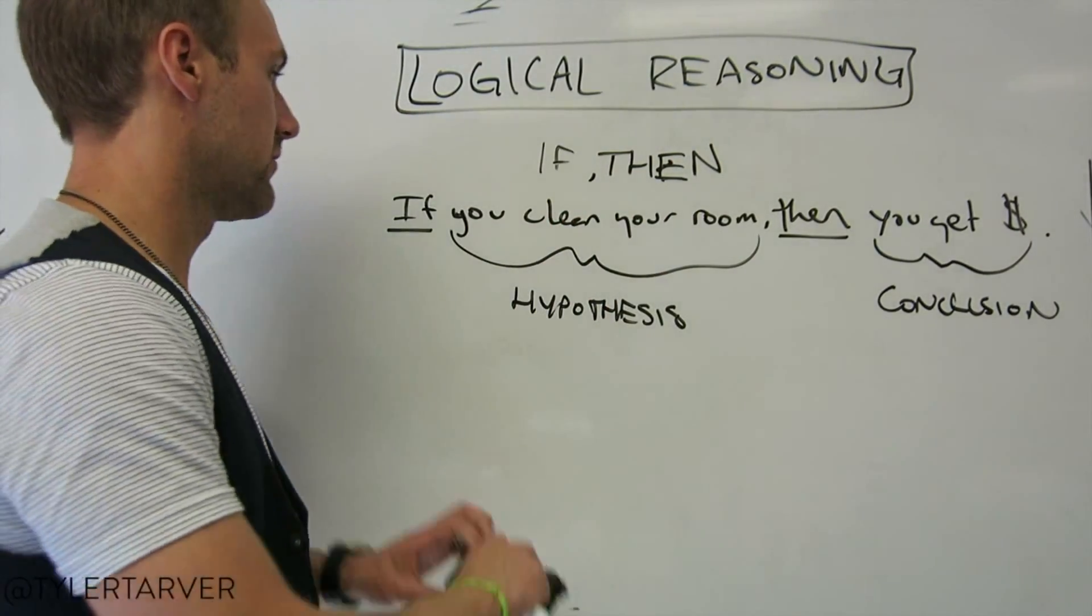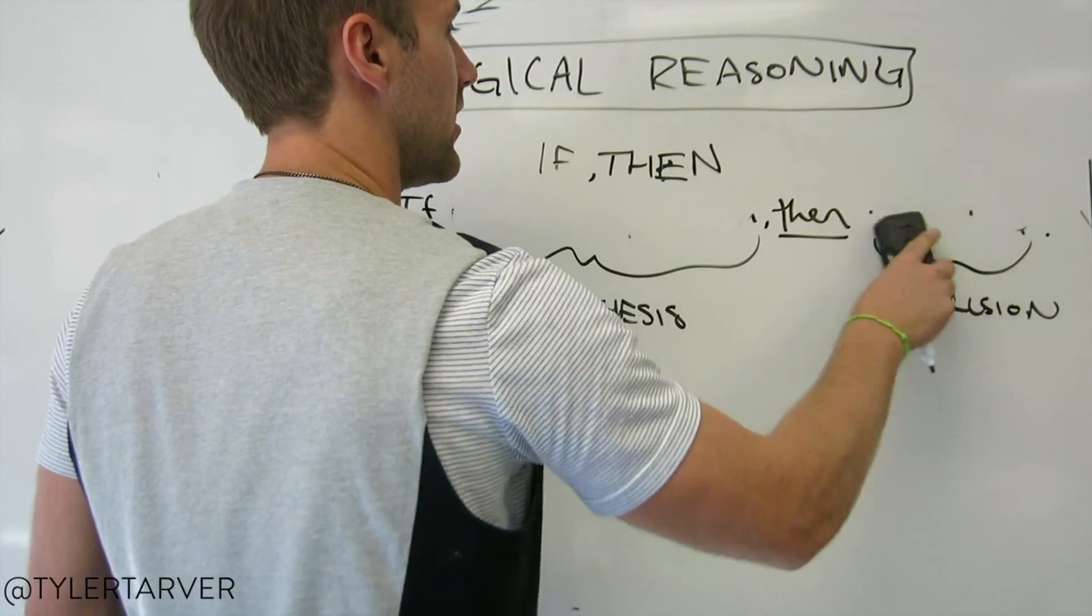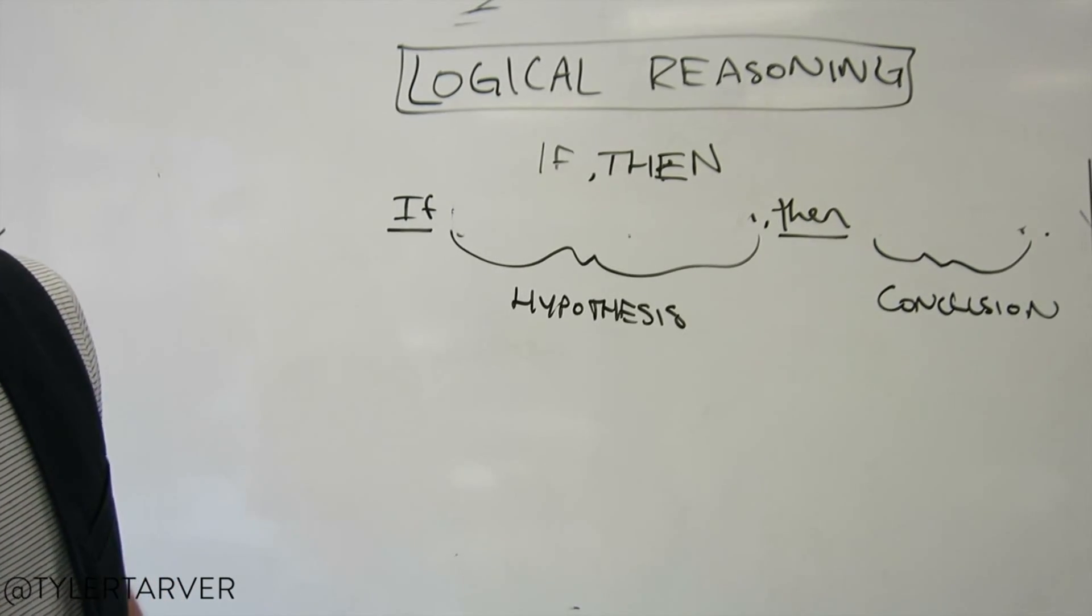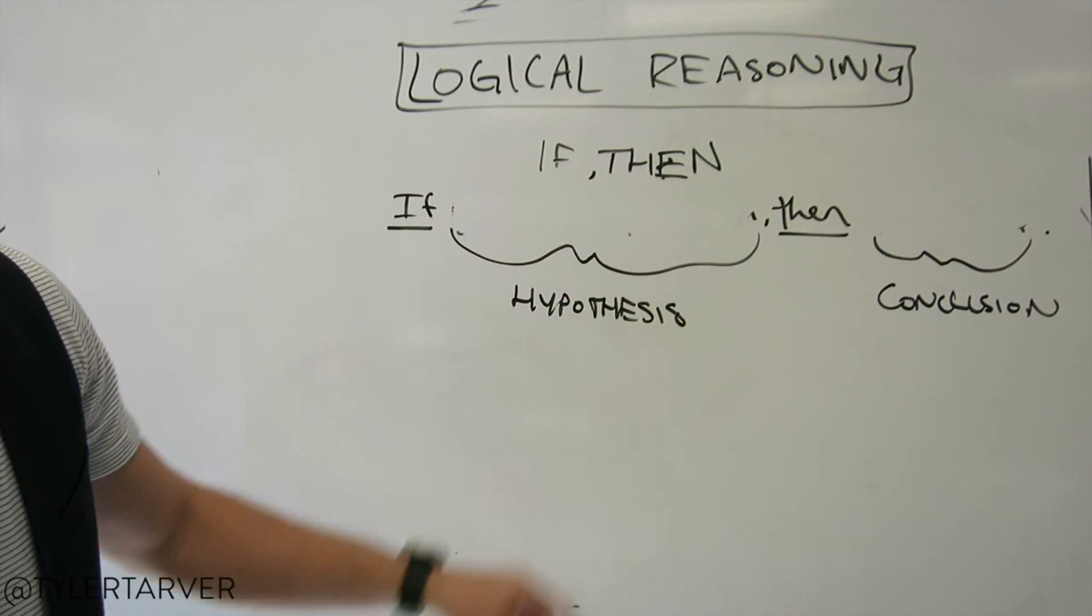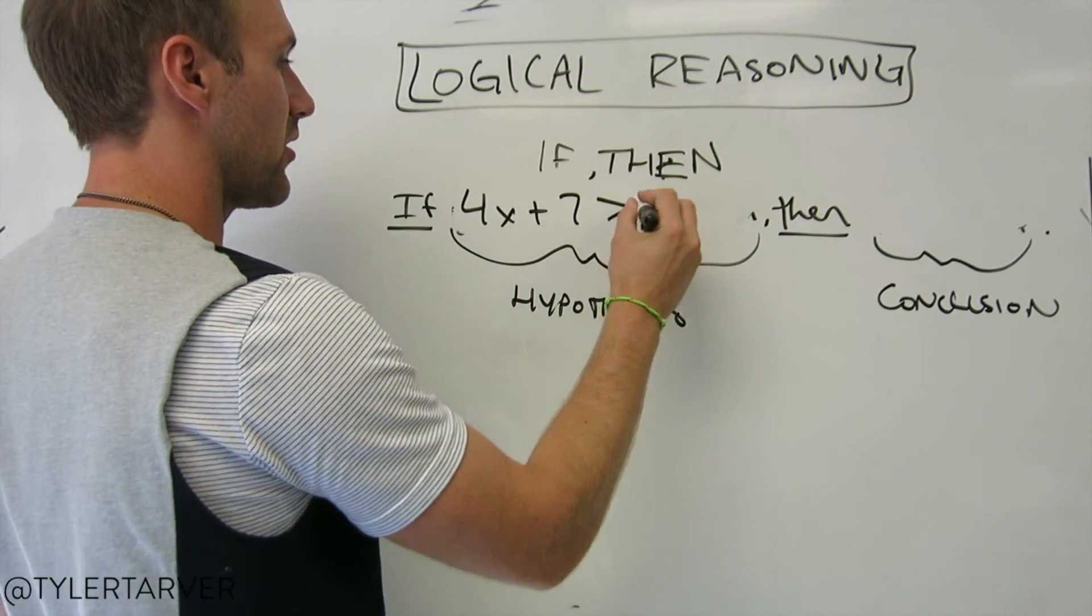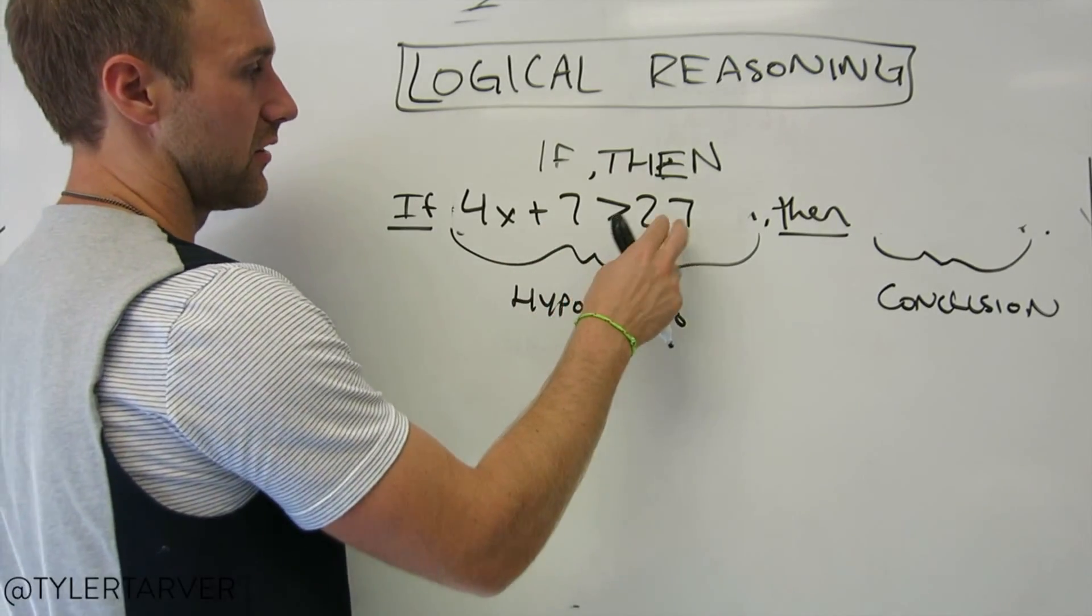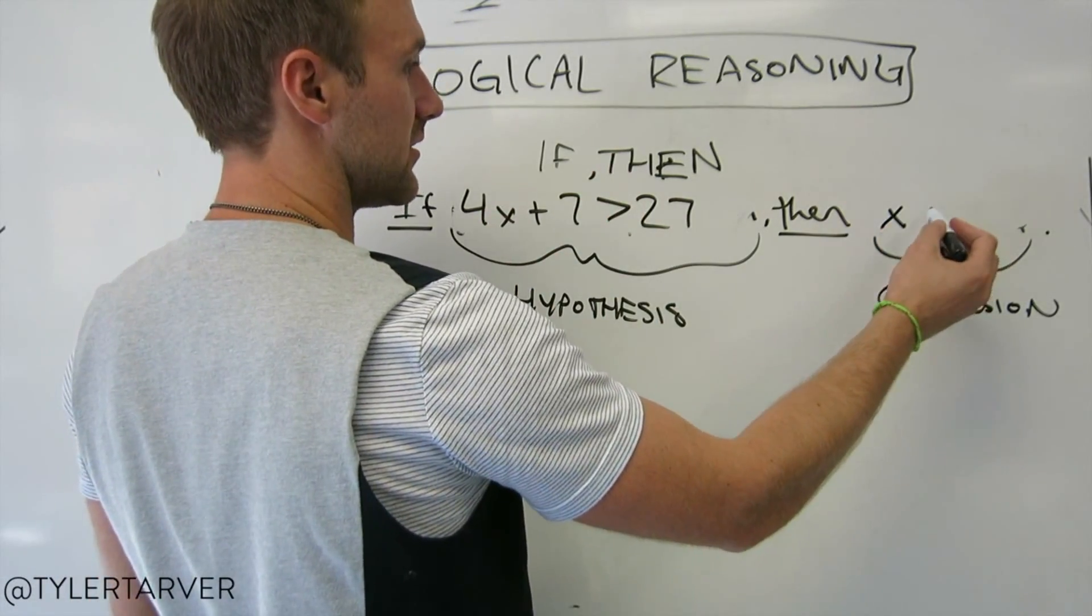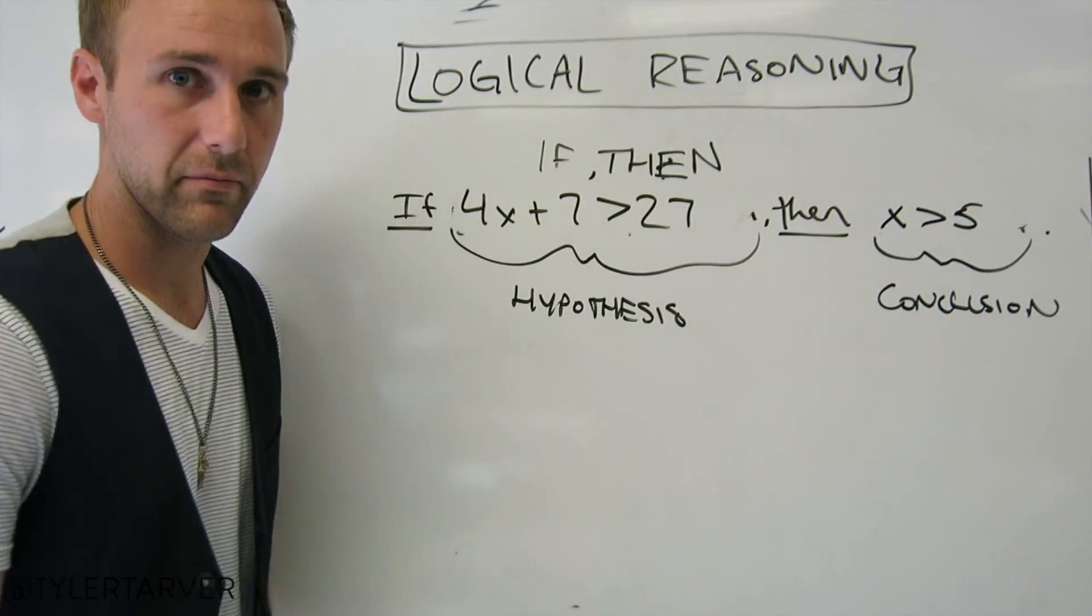Let's try it with the math version, okay? Let's say if... Let me see. Don't lose your patience, child. 4x plus 7. If 4x plus 7 is greater than 27, then what? Well, I don't know. Let's work it. Let's see. You subtract 7. That's 20 divided by 4, so it's 5. Then x is greater than 5. Okay? Cool.